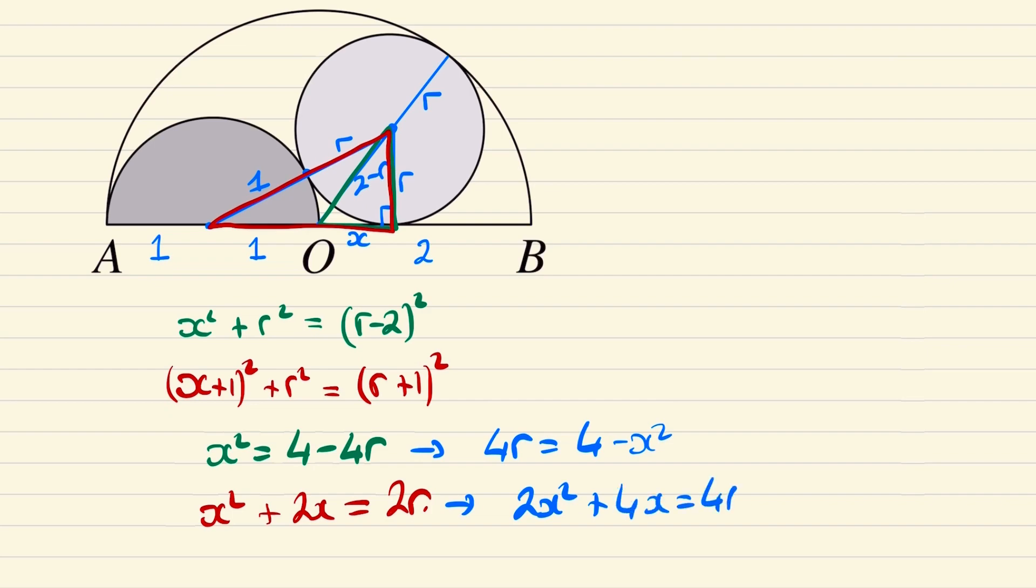Then in total we can produce a quadratic equation such that 3x squared plus 4x minus 4 is equal to zero, or in other words 3x minus 2 times x add 2 is zero.